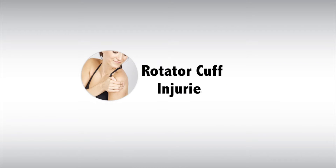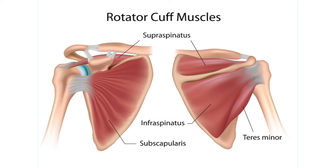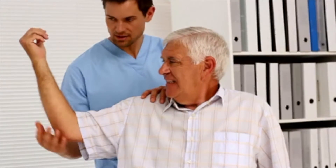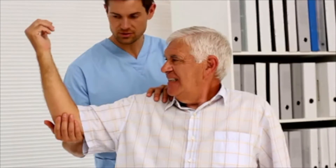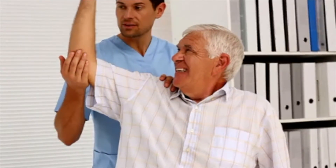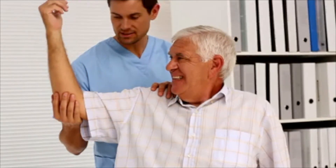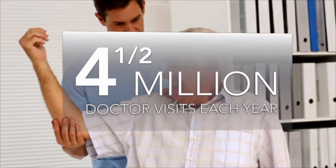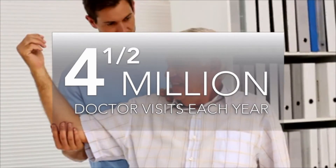The term rotator cuff describes a group of four small muscles and tendons that hold the ball of your shoulder into its shallow socket while your larger muscles move your arm. Strains and injuries to the rotator cuff are the most common cause of shoulder problems, accounting for four and a half million doctor visits each year.